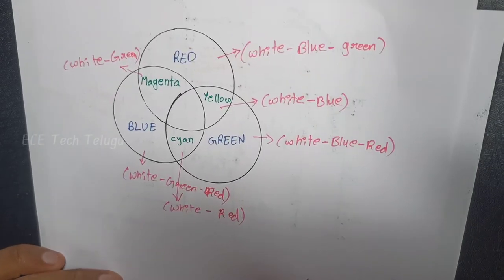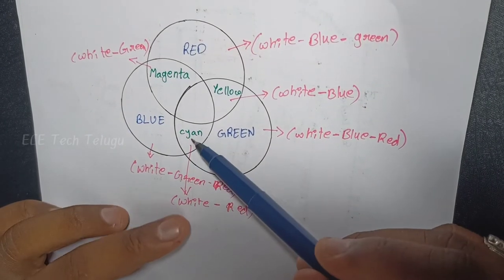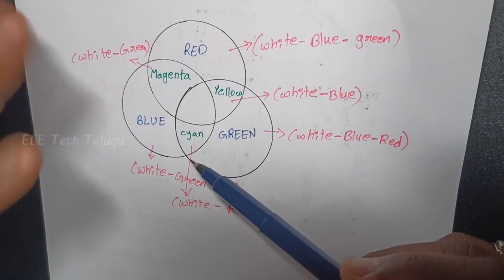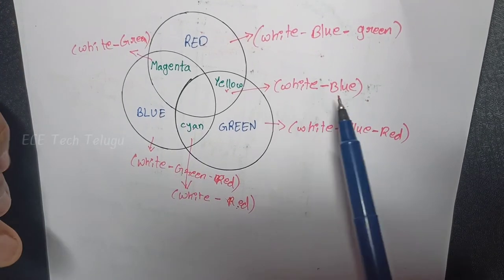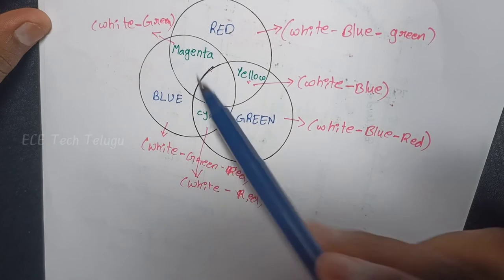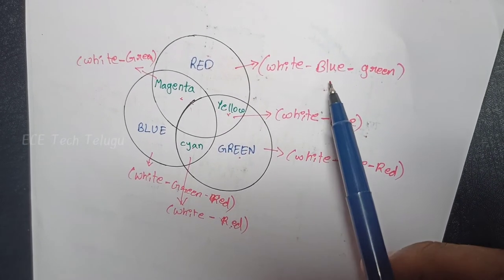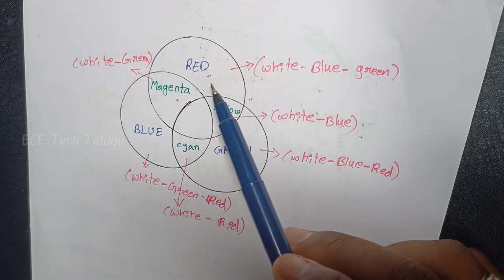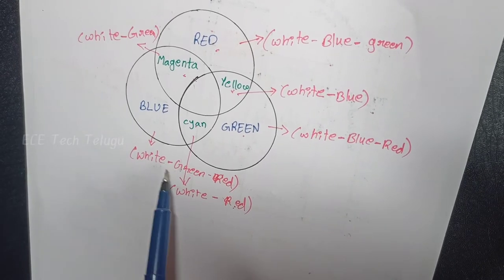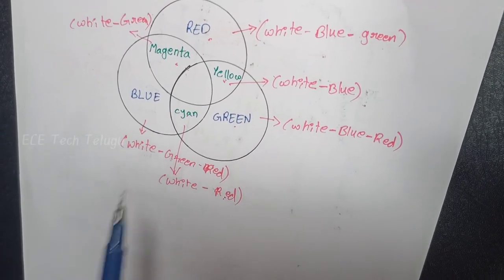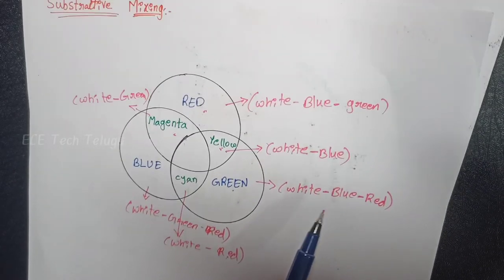So cyan is the straight opposite color of red: cyan = white minus red. Yellow is opposite to blue: white minus blue = yellow. Magenta is opposite to green: white minus green = magenta. So subtractive mixing means: whatever color we require, absorb the rest of the colors and reflect back — that is subtractive mixing.